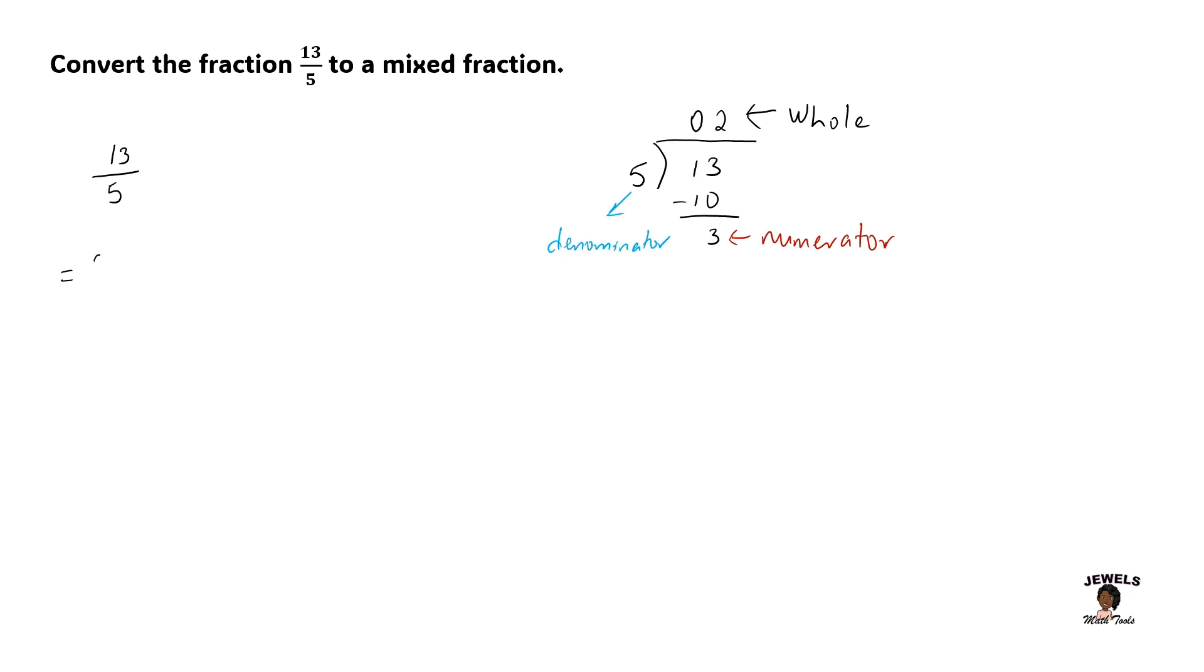So we're going to begin with our whole number. So my whole number is 2. That number will be written big. My numerator, which is our remainder in our fraction, will be at the top. And my divisor, which is 5, will return back to my denominator. So you have to make sure that after you have done dividing, that each of these numbers are placed in their correct position.